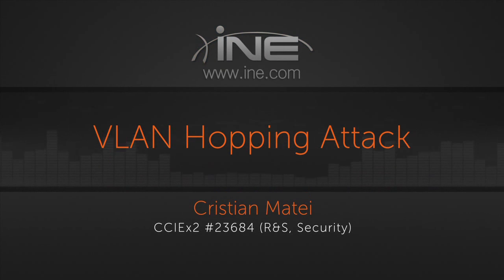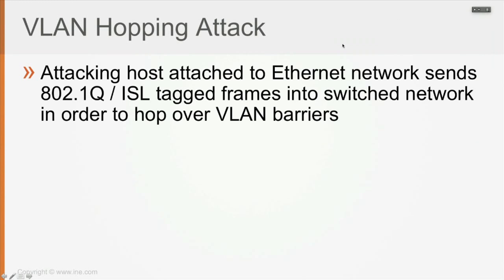The next type of attack is the VLAN Hopping Attack, where an attacker host attached to an Ethernet segment sends .1Q or ISL tagged frames into the switch network in order to hop over VLAN barriers. The attacker can send traffic to different portions of the network without passing through a layer 3 device.